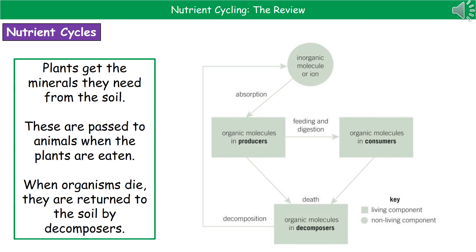Welcome to our review on nutrient cycling. The first thing we need to consider is what's happening in an ecosystem with regards to these nutrients. Plants take up minerals they need from the soil. Those are then passed on to animals when the plants get eaten, and when organisms die it gets returned back to the soil by the decomposers. So we've got this little cycle that goes round and round.